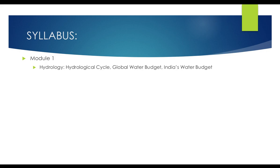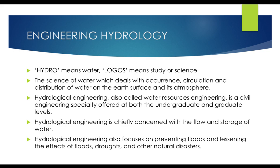Hydrology — what does this mean? Let's break it down. 'Hydros' means water, 'logos' means science or study. So the study of water is called hydrology. Now coming to engineering hydrology — the science of water which deals with occurrence, circulation, and distribution of water on earth's surface and its atmosphere. This is the definition of engineering hydrology.